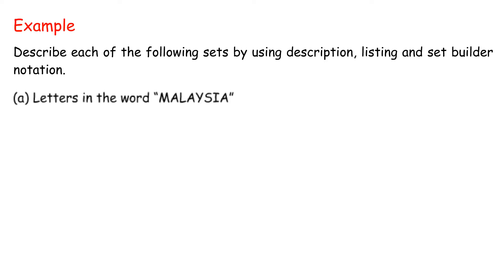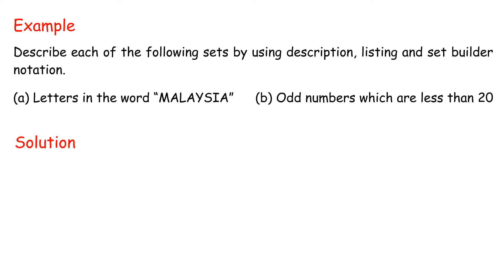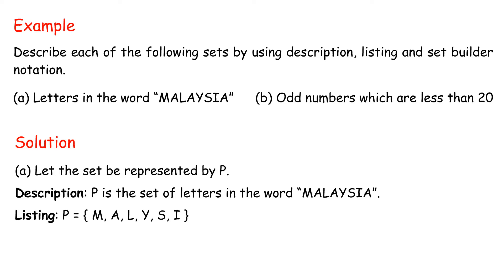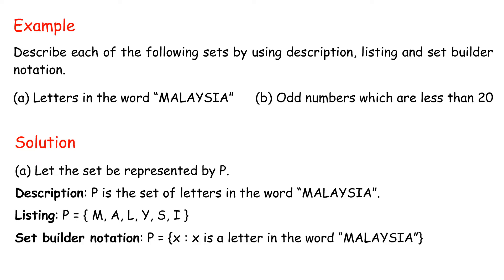Set A: letters in the word Malaysia. Set B: odd numbers which are less than twenty. Solution A — let the set be represented by P. Description: P is the set of letters in the word Malaysia. Listing: P = {M, A, L, Y, S, I}. Set-Builder notation: P = {x | x is a letter in the word Malaysia}.